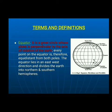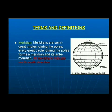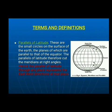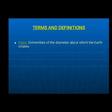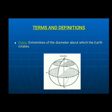Equator: a great circle which is perpendicular to the earth's axis is called the equator. It divides the earth into the northern and southern hemisphere. Meridian: great circles which pass through the poles and indicate the north-south direction. Parallels of latitudes: small circles which are parallel to the equator and perpendicular to meridians, representing east-west directions. Poles: the extreme ends of the diameter of the earth through which the earth's axis passes.